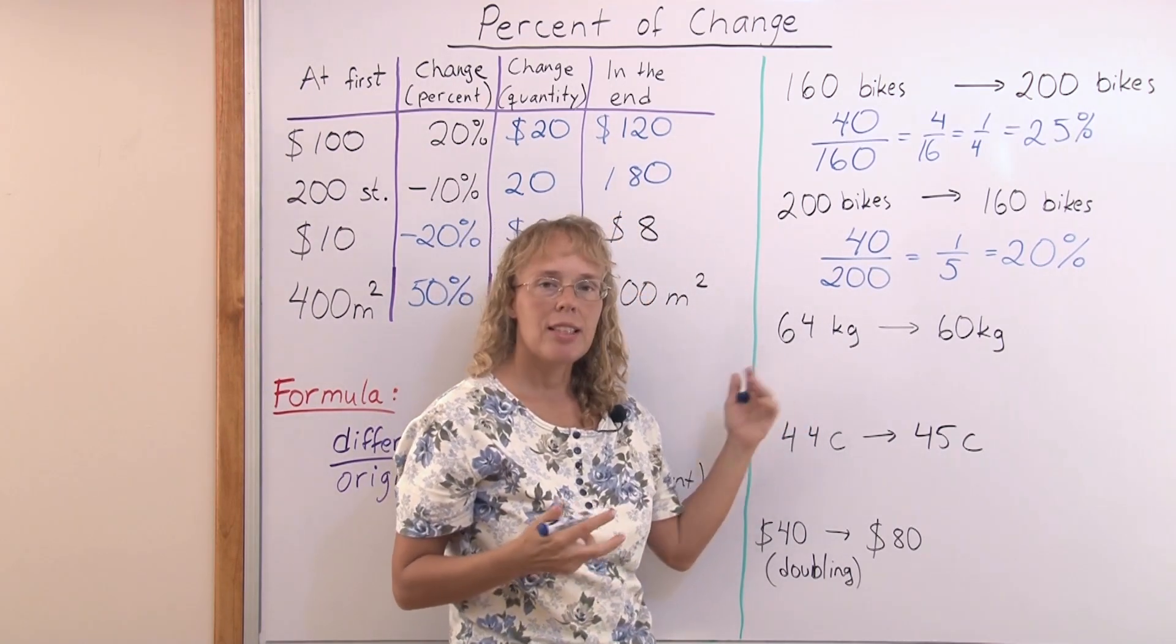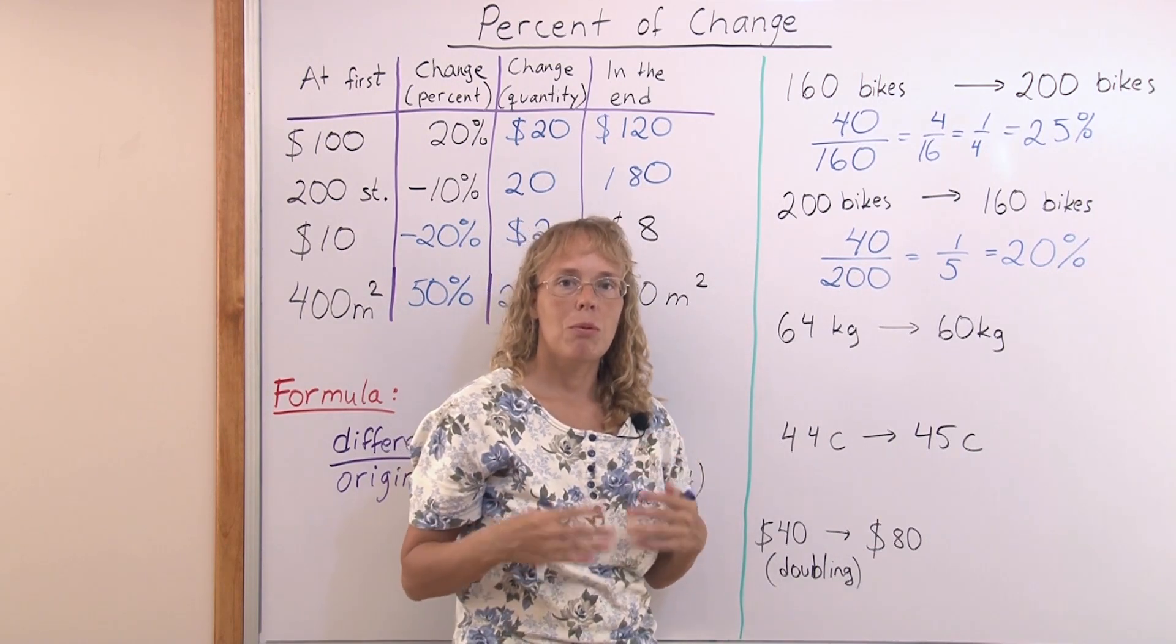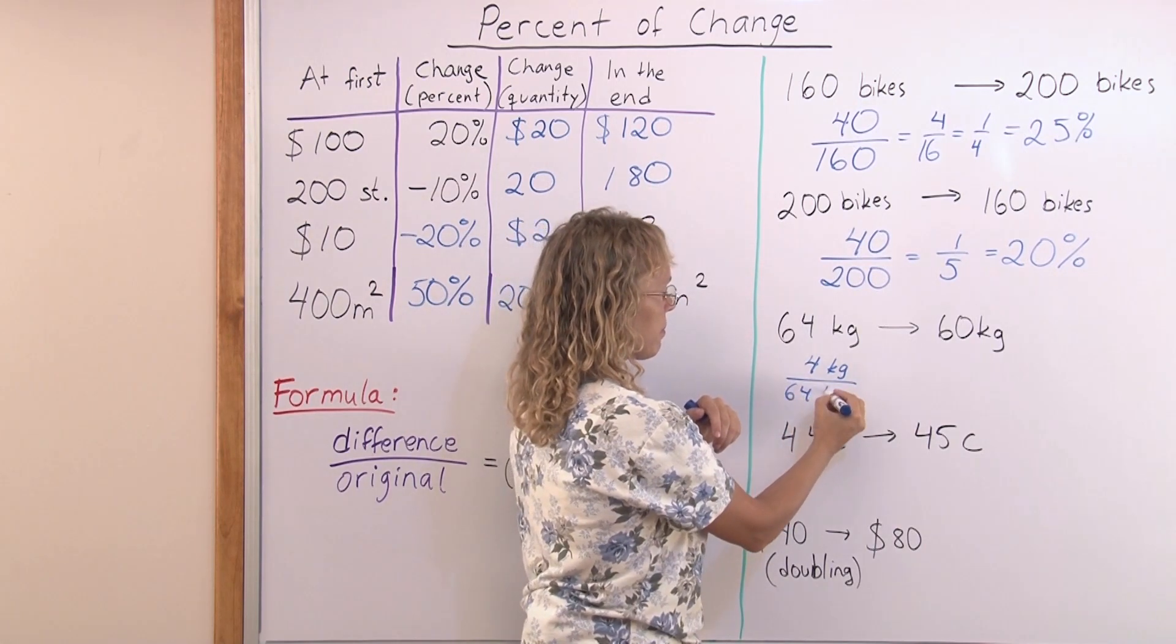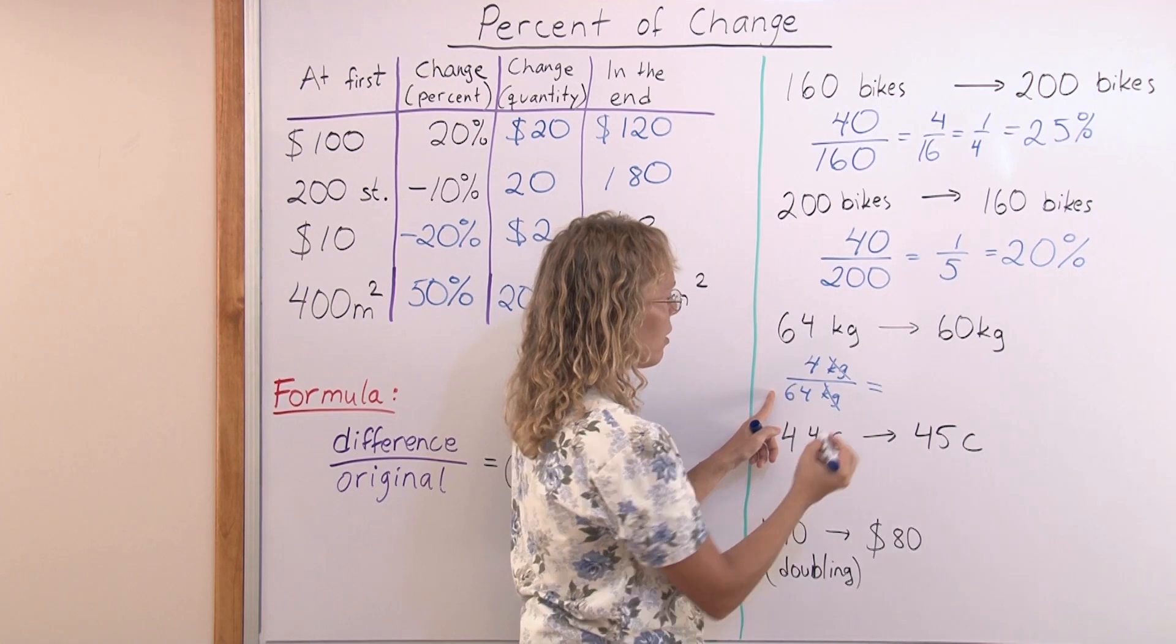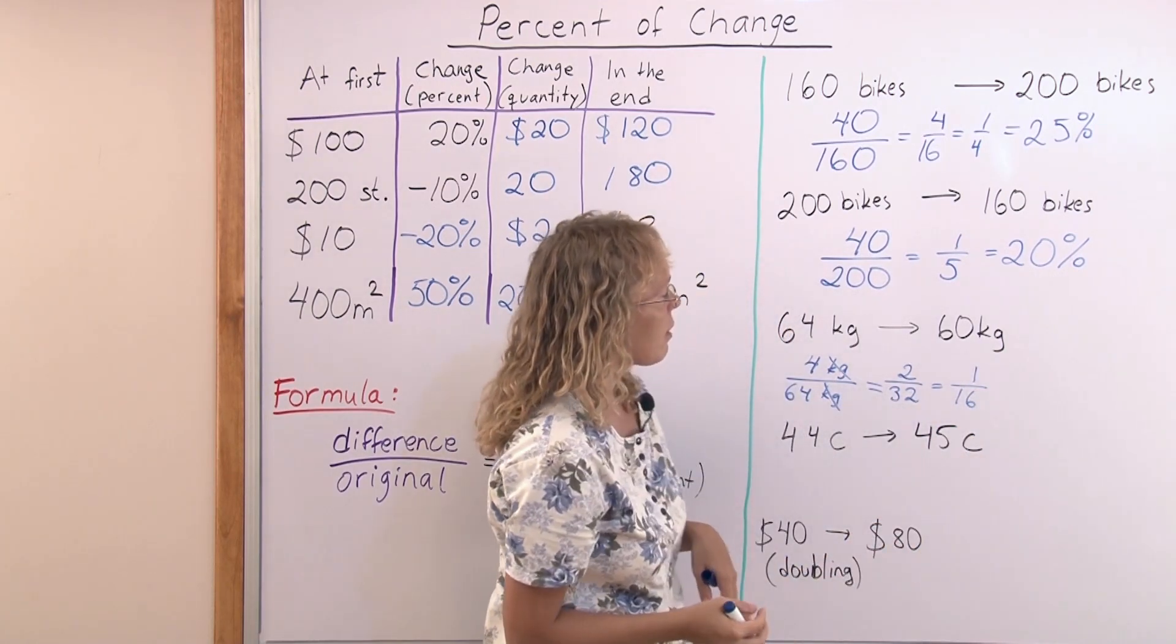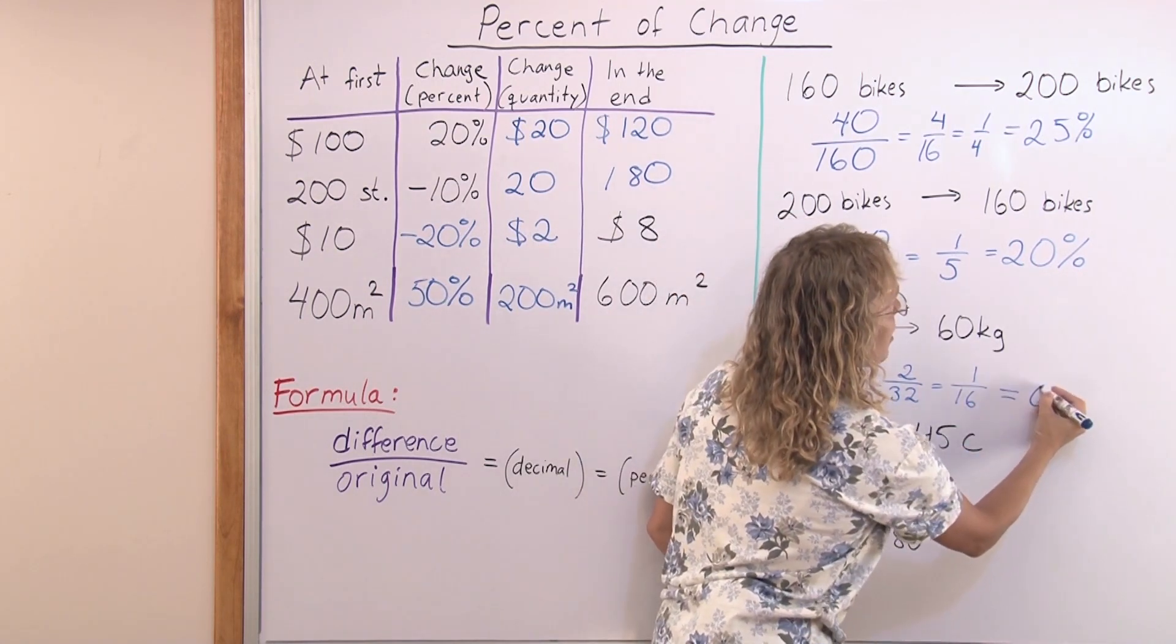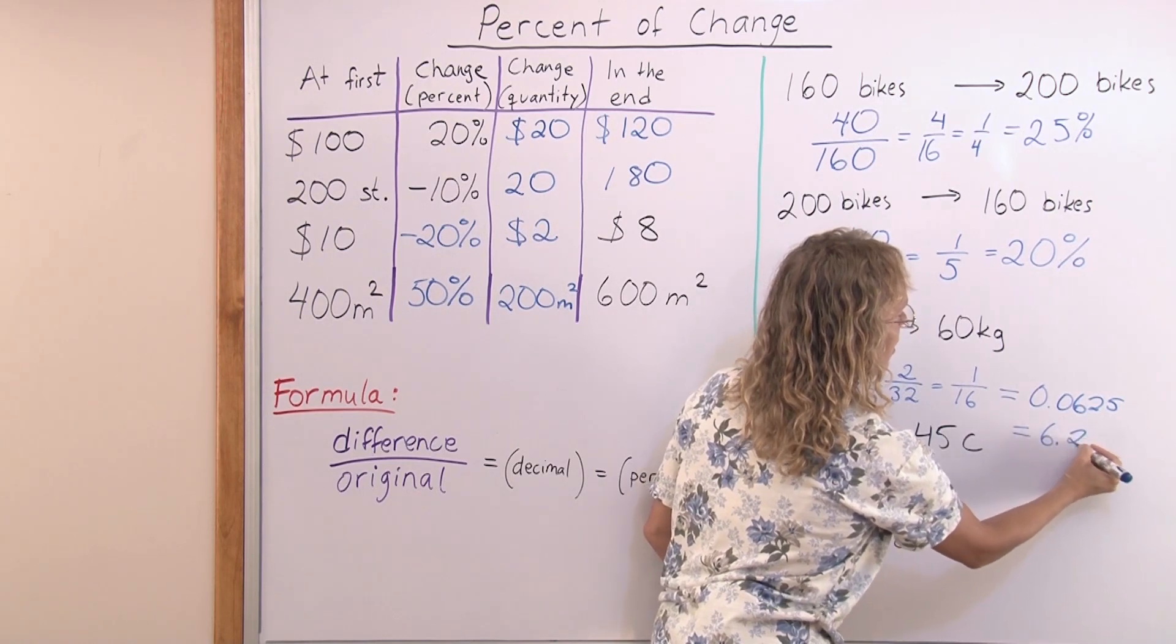Here we have kilograms. Let's say somebody loses weight, 64 kilograms, and they lose some and now they weigh 60 kilograms. By how many percent did their weight decrease? Look at the difference in these. The actual change in kilogram is 4 kilograms. And the original weight is 64 kilograms. You can basically cancel out the kilograms. 4 over 64. I'll simplify it first to 2 over 32 and then to 1 over 16. And now it's time for the calculator or long division. You divide 1 divided by 16, and I did that before the video. So the answer is 0.0625, which as a percent is 6.25%.